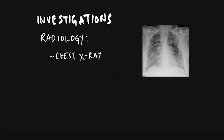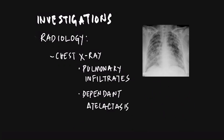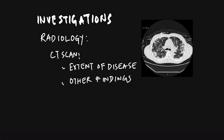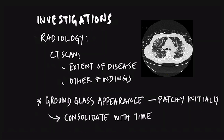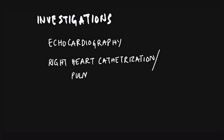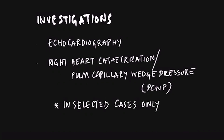Chest X-ray shows bilateral diffuse pulmonary infiltrates with dependent atelectasis. CT scan may help in knowing the extent of lung involvement and can pick up other findings like atelectasis, consolidation, or effusion not detected on chest radiograph early. The findings initially show a patchy ground-glass appearance which consolidates later on. Echocardiography and pulmonary artery catheter to measure pulmonary capillary wedge pressure may be needed in selected cases to exclude cardiac failure as a cause of pulmonary edema.